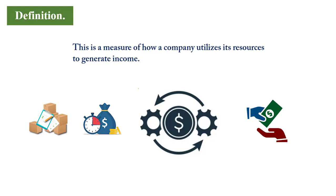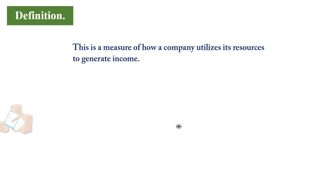If you sell inventory within the stipulated period, you have been efficient. If you buy from your suppliers on credit and pay them off within the agreed schedule, you are deemed efficient. Flouting the agreement risks suppliers refusing to trade with you on credit, and if the business lacks enough cash to buy crucial resources, it may need to take on loan facilities at extra cost or scale down its activities, threatening its ability to thrive.